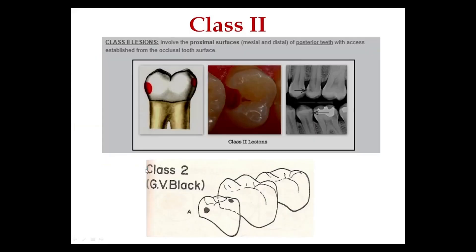Class number two involves the proximal surfaces — mesial and distal — of posterior teeth, that is molars and premolars, with access established from the occlusal tooth surface.